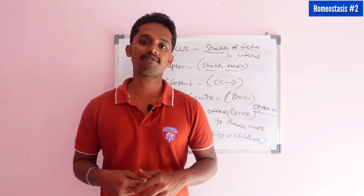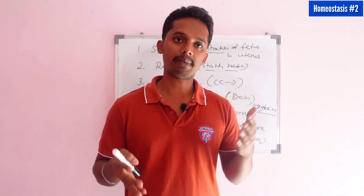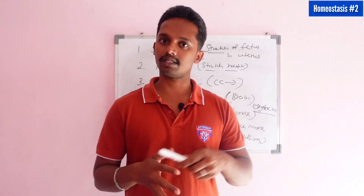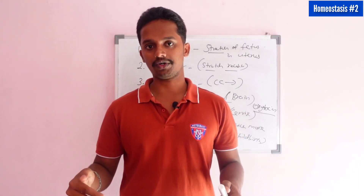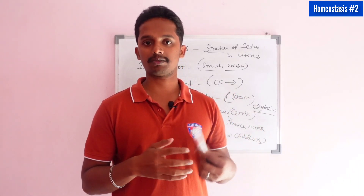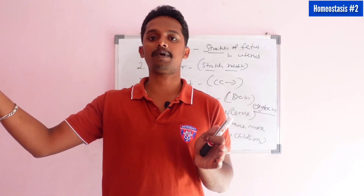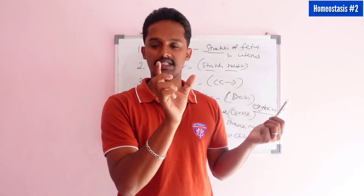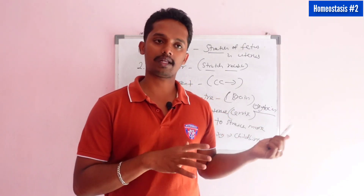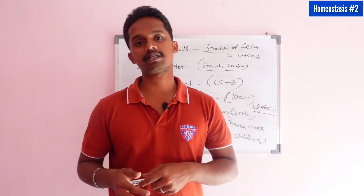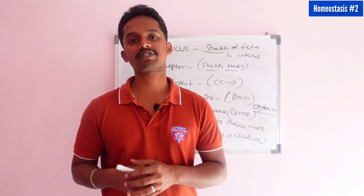This is a good example of positive feedback mechanism. In negative feedback, the response produces an action opposite to the stimulus to restore normal. In positive feedback, the response increases the stimulus further. A small stretch leads to more stretching — that is positive feedback mechanism. So, positive and negative feedback are the two types of homeostasis.